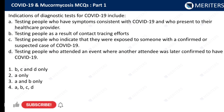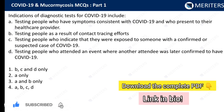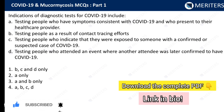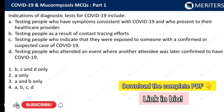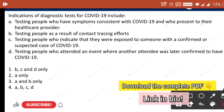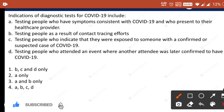Indications of diagnostic test for COVID-19 include: testing people who have symptoms consistent with COVID-19 presenting to their healthcare provider; testing people as a result of contact tracing efforts; testing people who indicate they were exposed to someone with a confirmed or suspected case; or testing people who attended an event where another attendee was later confirmed to have COVID-19. Such questions require careful reading, especially under pressure — always stay calm. The answer is all of the above; in all these cases we will indicate the diagnostic test.